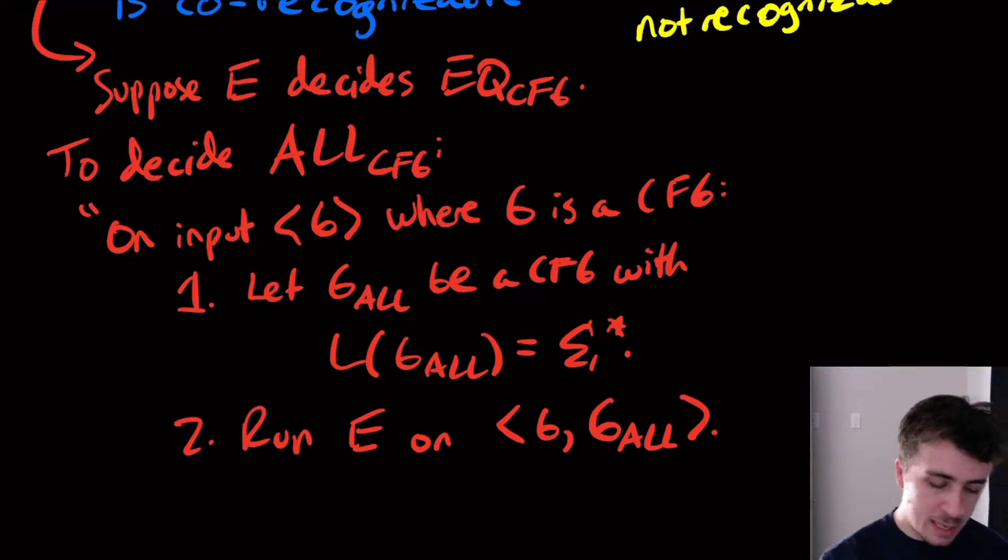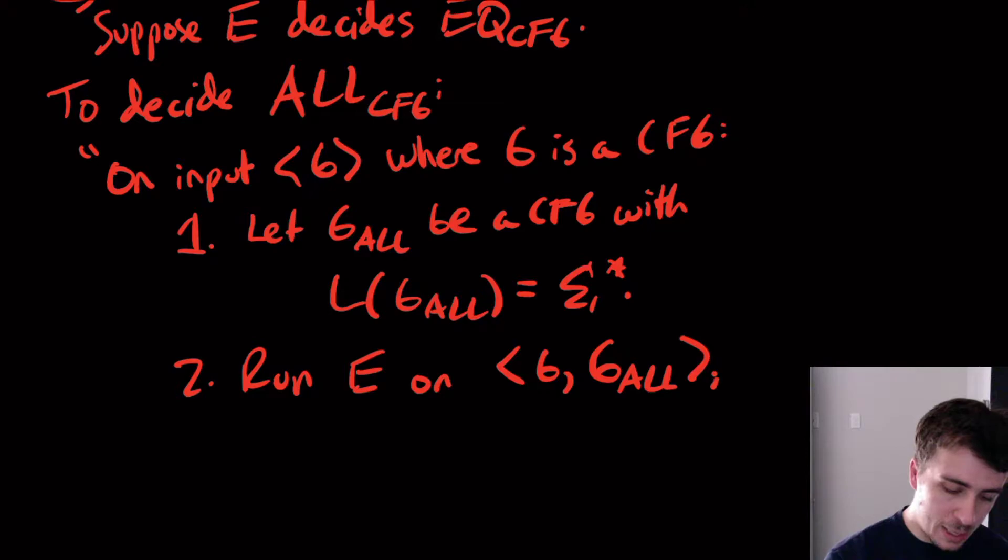Note that since this is a supposed decider, it will say whether or not these two have the same language. So G, if it has sigma star as its language, the E decider will say yes. And if it doesn't have sigma star, this will say no. So what we can do here, and I'll invite you to check the details, is we'll just output the same answer.